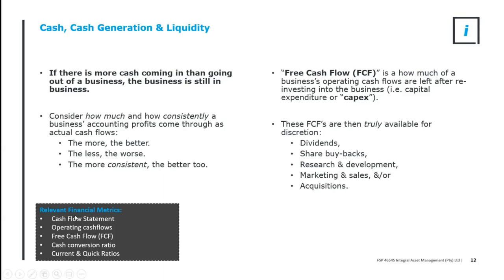Where do you see this? The obvious starting point is there is a literal statement in the financials called the cash flow statement — look at that. Look for operating cash flows, take out the capital expenditure, and there are your free cash flows. Consider how much of the income statement built on IFRS or accounting principles translates into the cash flow statement — we call that the cash conversion ratio. Consider how this translates to current and quick ratios, which is something we call liquidity on the balance sheet.